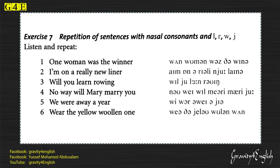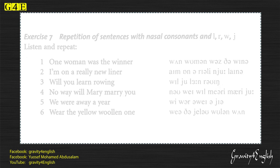Exercise 7: Repetition of sentences with nasal consonants. Listen and repeat. One: One woman was the winner. Two: I'm on a really new liner. Three: Will you learn rowing? Four: No way will Will marry you. Five: We were away a year. Six: Where's the yellow woollen one? End of Audio Unit 7.